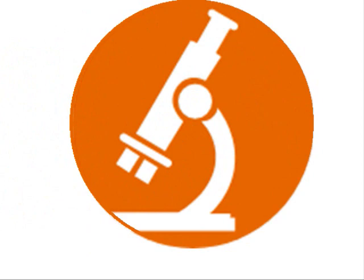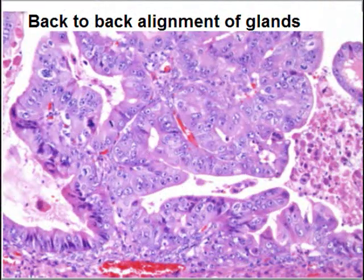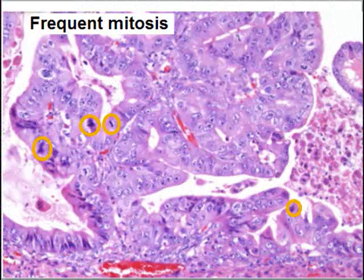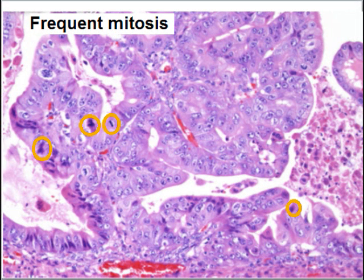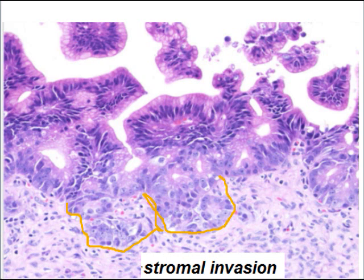When we observe the section under the microscope, there is a complex structure of malignant mucinous epithelium forming papillary formations. There is back-to-back alignment of glands with little stroma. There is stratification and multilayering of the mucinous epithelium. There are frequent and abnormal mitoses, and there is also invasion of the wall of the cyst — this is called stromal invasion.